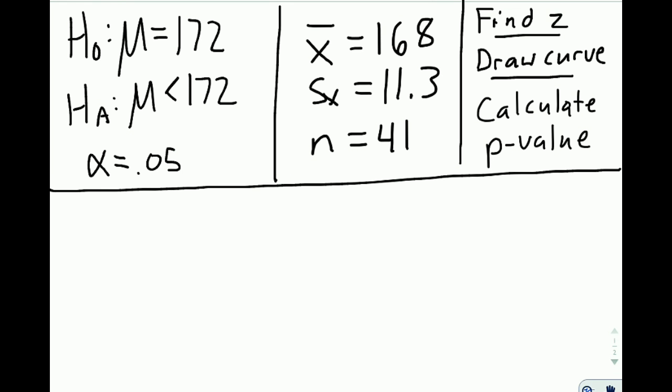Alpha is 0.05, our standard value, our standard cutoff for our p-value. Next, it already shows our sample data. Since we went out and collected our sample, we found a sample mean of 168, which is in fact less than 172. So we're on the right track, we just have to figure out if it's less enough. Our standard deviation is 11.3 and our sample size n is 41.